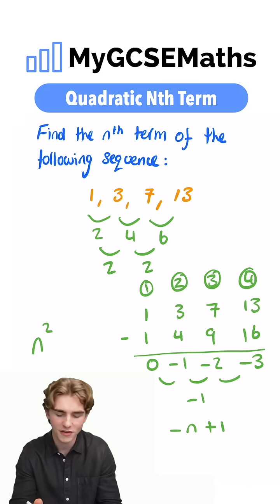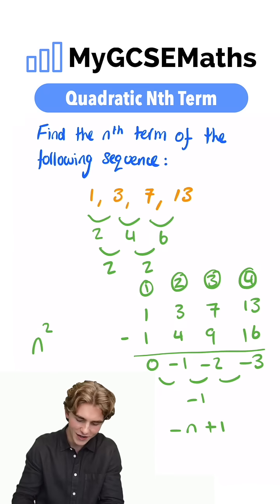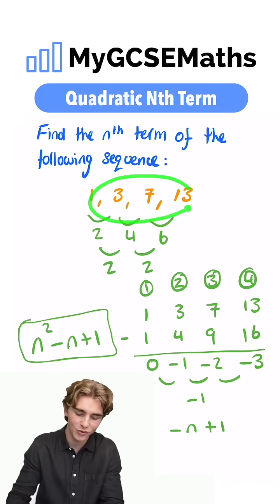The final step to this, guys, is going to be to tag this nth term on the end of our n squared. So we have n squared, subtract n plus 1. That is going to be our nth term of this sequence here.